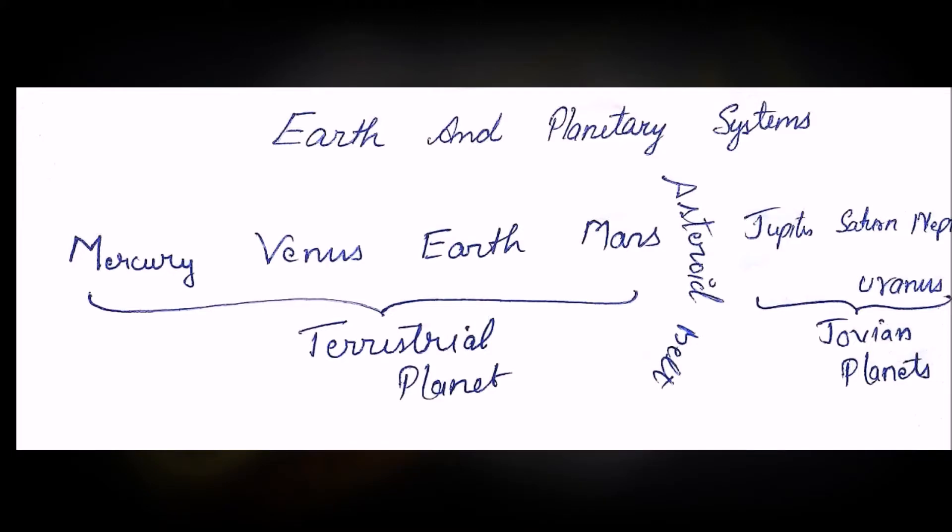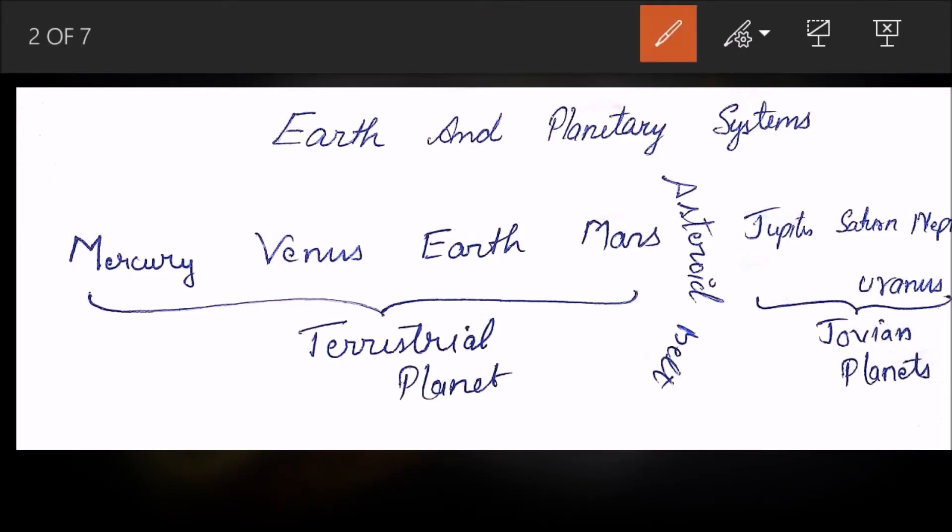First, we have the solar system. In the solar system, we have these first four planets: Mercury, Venus, Earth, and Mars. These are called terrestrial planets. Then there's the asteroidal belt, followed by Jupiter, Saturn, Uranus, and Neptune. Pluto, unfortunately, is now not a planet; it's a dwarf planet, so it will not be considered in the list of planets. We will start with Mercury and go till Mars in detail.